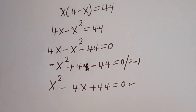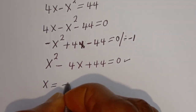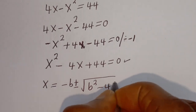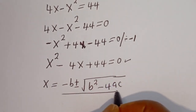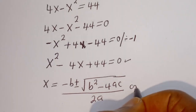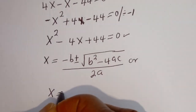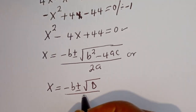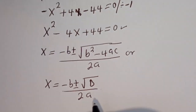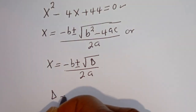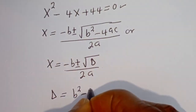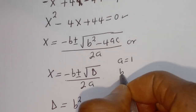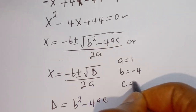Let's solve this using the quadratic general formula: x is equal to minus b plus or minus square root of (b squared minus 4ac) all over 2a. From this equation, a is equal to 1, b is equal to minus 4, and c is equal to 44.